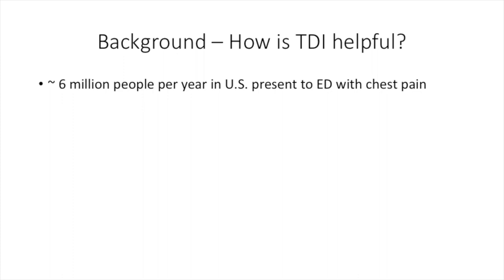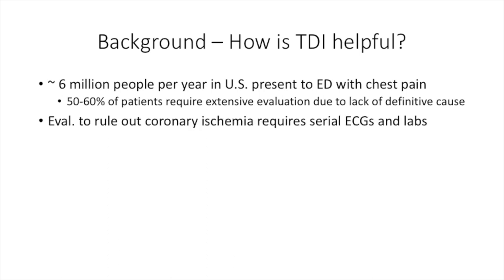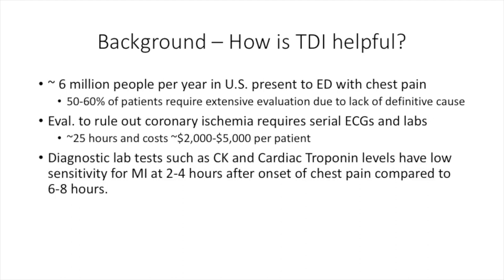Roughly 6 million people per year in the U.S. come to the ED with chest pain, and about half of them require extensive evaluation due to a lack of definitive cause. Typical evaluation to rule out ischemia requires several ECGs and labs, and it can take up to 25 hours and cost $2,000 to $5,000 per patient. Lab tests such as creatine kinase and cardiac troponin levels have a low sensitivity for detecting an MI with recent onset of chest pain compared to prolonged chest pain.